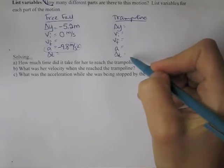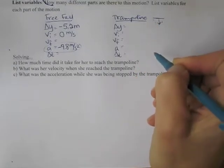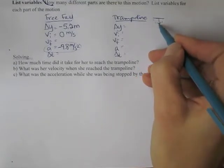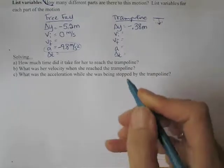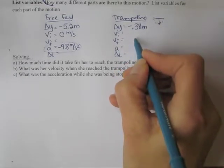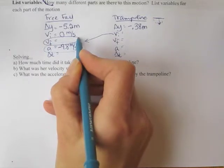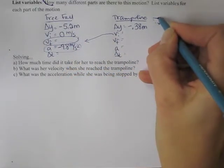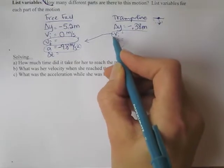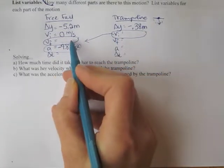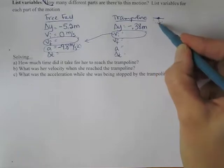Now what about for the motion in the trampoline? In the trampoline, the child hits the trampoline and then goes down 38 centimeters. So that's a delta y of negative 0.38. The initial velocity when the child hits the trampoline. We don't know that, but here is a connection. The final velocity of the free fall motion, which is that velocity just as the child hits the trampoline, is going to be the initial velocity for the trampoline part of the motion. So these two numbers are exactly the same.